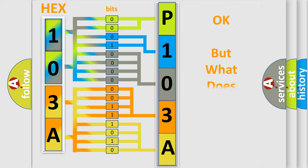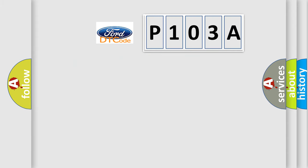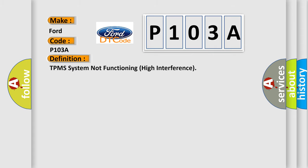The number itself does not make sense to us if we cannot assign information about what it actually expresses. So, what does the diagnostic trouble code P103A interpret specifically? The basic definition is TPMS system not functioning high interference. And now this is a short description of this DTC code.